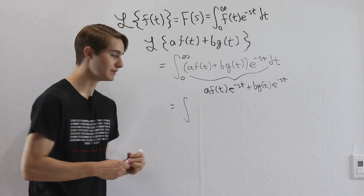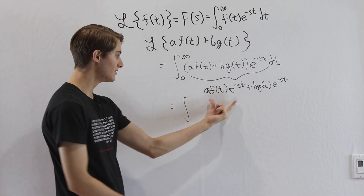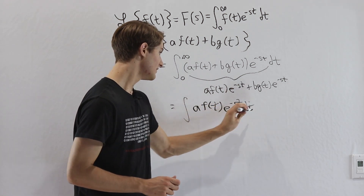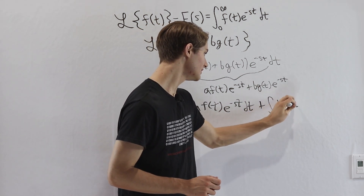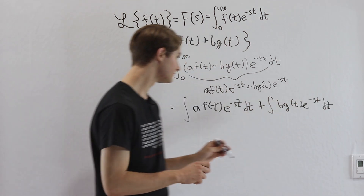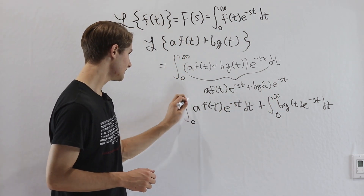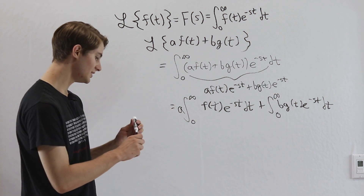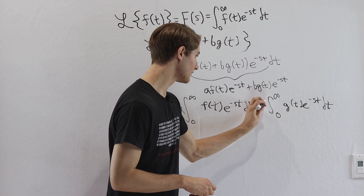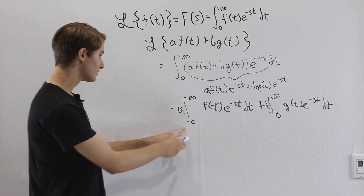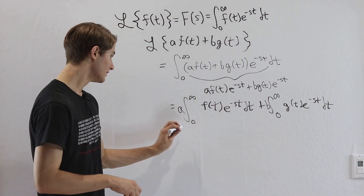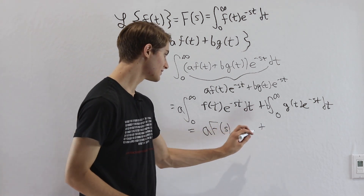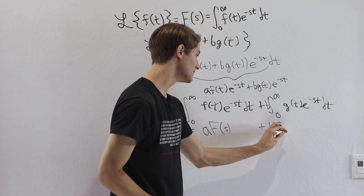Since the integral is a linear function, the integral of a sum can be split: the integral of a·f(t)·e^(−st) plus the integral of b·g(t)·e^(−st), both from 0 to infinity. Constants can be pulled outside, giving a times the integral of f(t)·e^(−st) plus b times the integral of g(t)·e^(−st). These integrals are exactly the Laplace transforms, so we get a·F(s) plus b·G(s).